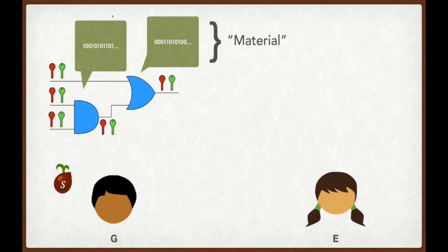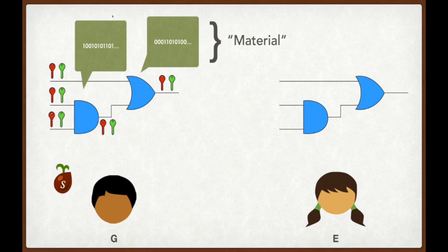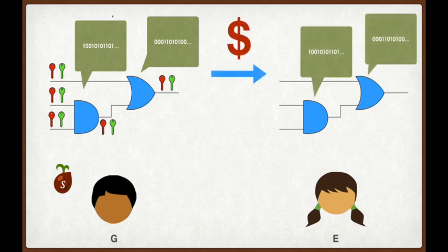Most garbling schemes satisfy the property that their material happens to be indistinguishable from uniform strings. This property will be crucial when discussing stacked garbling. To continue GC evaluation, the generator G must convey the material to the evaluator E such that she can use the material to securely evaluate the circuit. This process is simple since the generator G just sends the material across the wire. The simple transmission of material from G to E is the most expensive part of garbled circuit protocols. This is the communication bottleneck that stacked garbling helps to relieve.